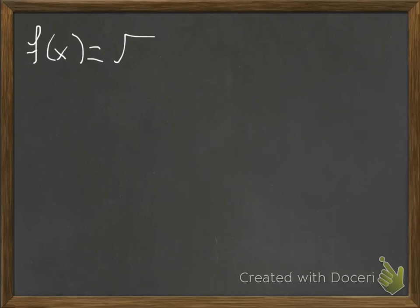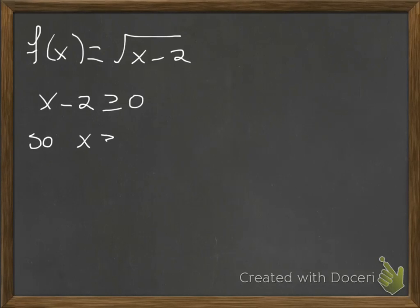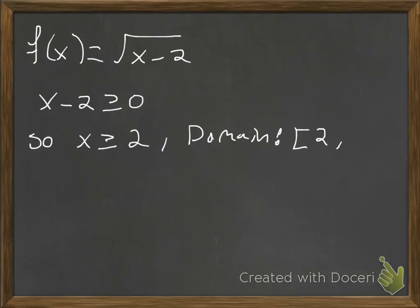Let's say f of x is equal to the square root of x minus 2. The radicand is x minus 2, so we set that greater than or equal to 0. Adding 2 to both sides, we get x is greater than or equal to 2, so the domain is [2, ∞).